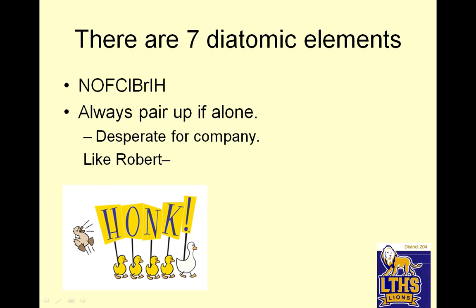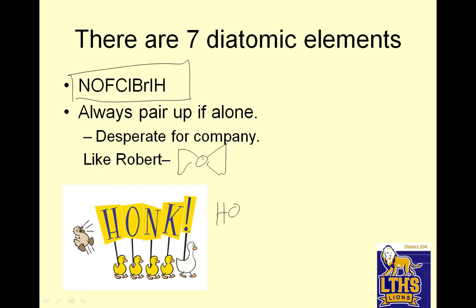There are seven diatomic elements. They always pair up when alone — they're desperate for company. The other way of showing them is with the "HONClBrIF" mnemonic, which I personally like better.